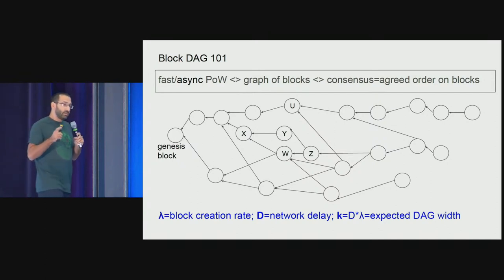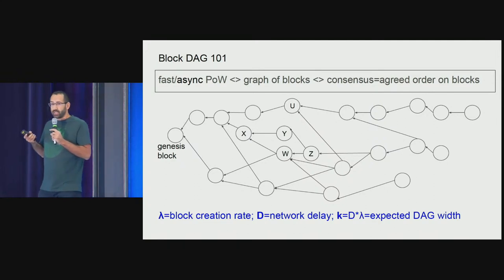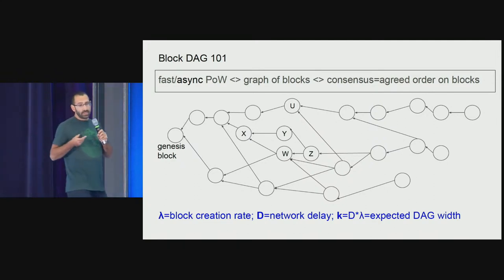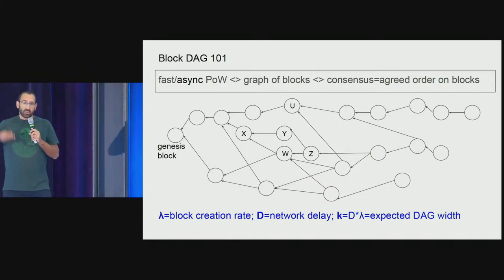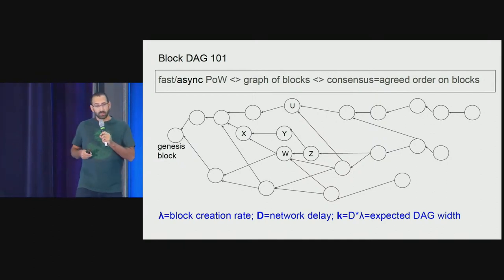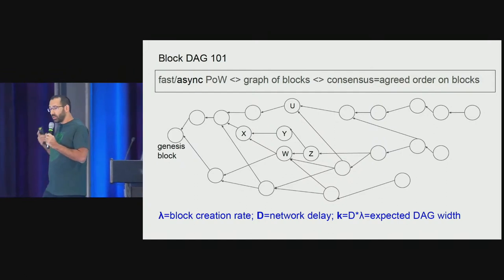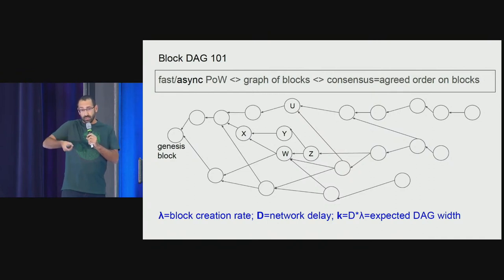The parameter K is basically the DAG width. If the delay in the network is 10 seconds and there are 10 blocks per second, you would expect the DAG width to be 100 blocks. In this example the DAG width is about 4 or 5 blocks. The core issue is whether you know K or not — whether the protocol assumes K in advance, whether the protocol designer hard-coded the parameter K or D into the protocol.